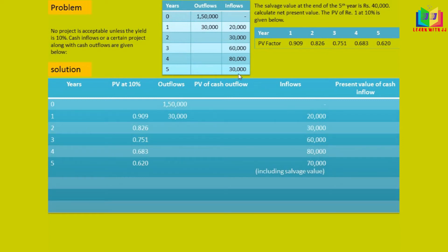The inflow is 30,000 and the salvage value at the end of the 5th year is 40,000. So 30,000 plus 40,000 gives 70,000, because as mentioned, salvage value is a kind of cash inflow. Now we have to find the PV of cash outflow first.